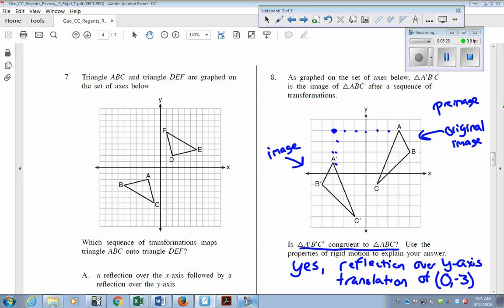So when you see these questions where it's asking for an explanation, in the case of reflection, specify the line. Translation, you want to specify the movement, the directions, and which way you're going.